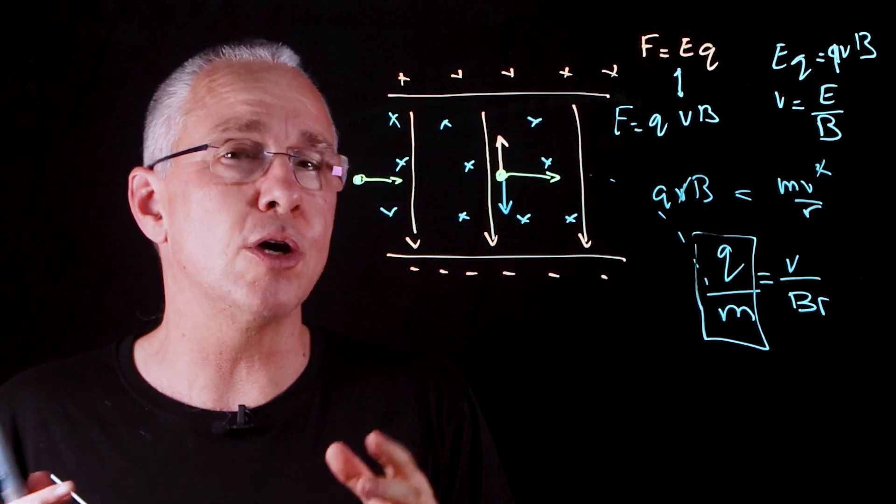He was able to understand the velocity already because he determined that, and he was also knowing the magnetic field strength. He was able to look where that charge was going and as a result work out the radius of curvature, and then he worked out the charge to mass ratio.